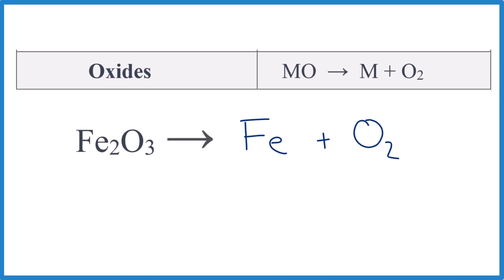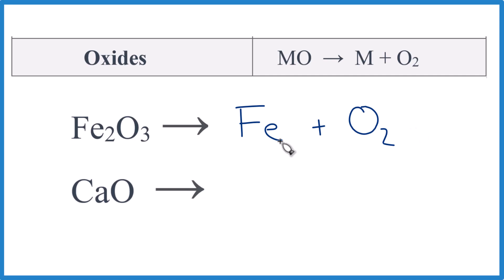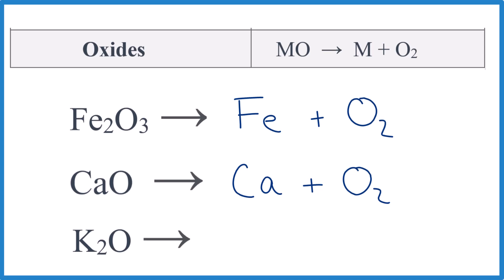Pause. Let's give this one a try. So we have our metal oxide. We get our metal, that calcium metal, plus O2. Done. Let's do one more. These are easy. Pause. Give that one a try. So the potassium oxide, that decomposes into the metal, the potassium, plus oxygen gas. That's it.